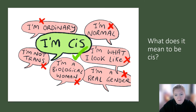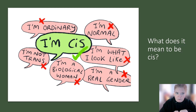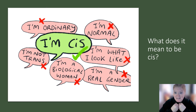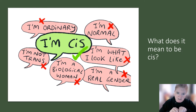What does it mean to be cis? It means that your perceived gender matches the sex you were assigned at birth — cisgender. It's okay to say that you're cis. But refrain from saying things like 'I'm not trans, I'm ordinary,' 'I'm normal,' 'I'm a real gender,' or 'I'm a biological one.'